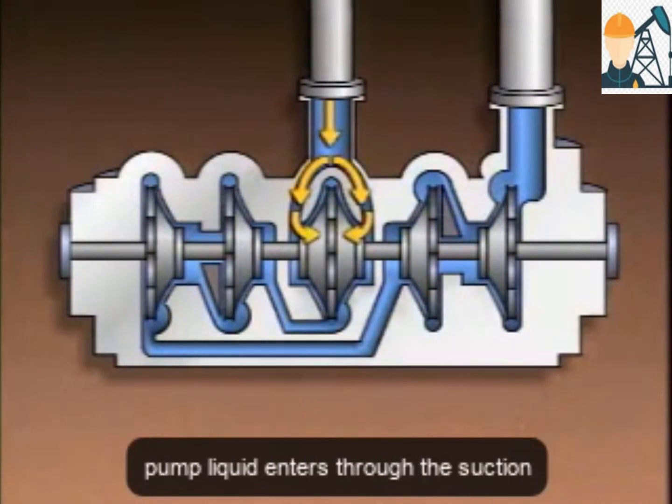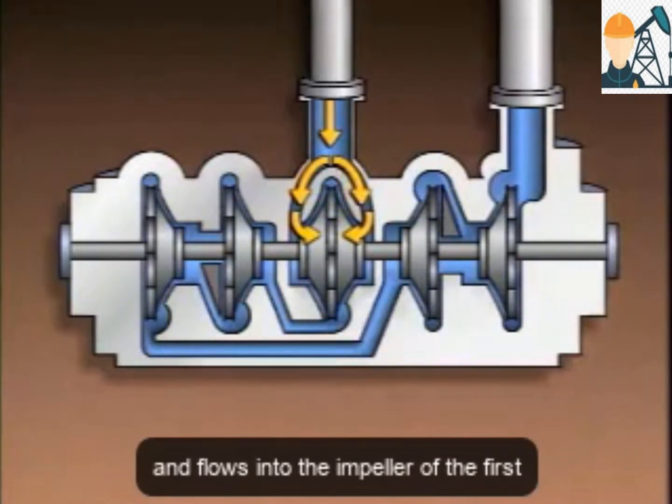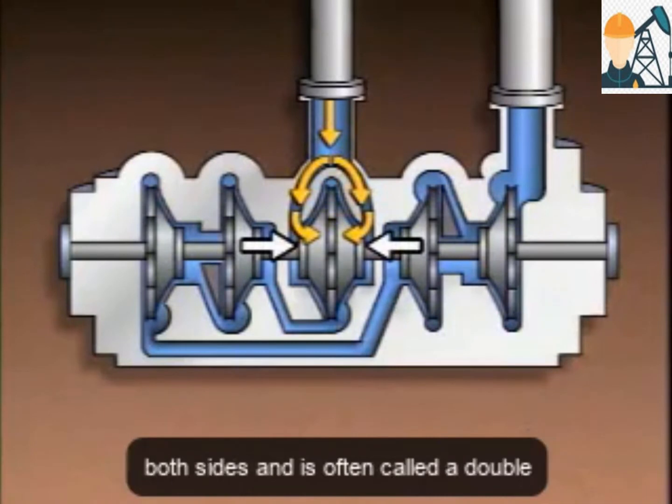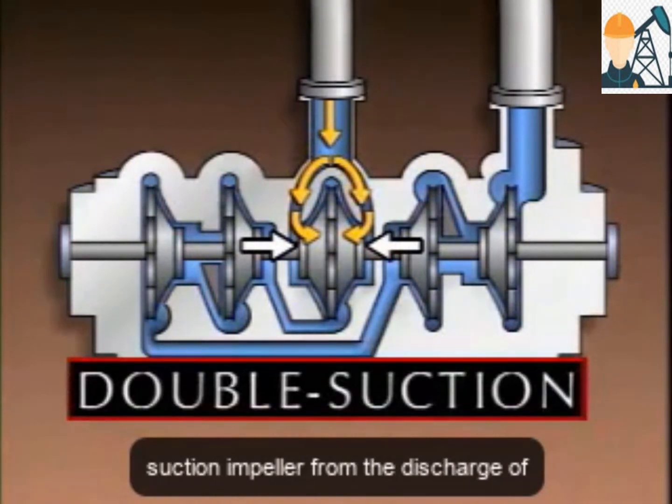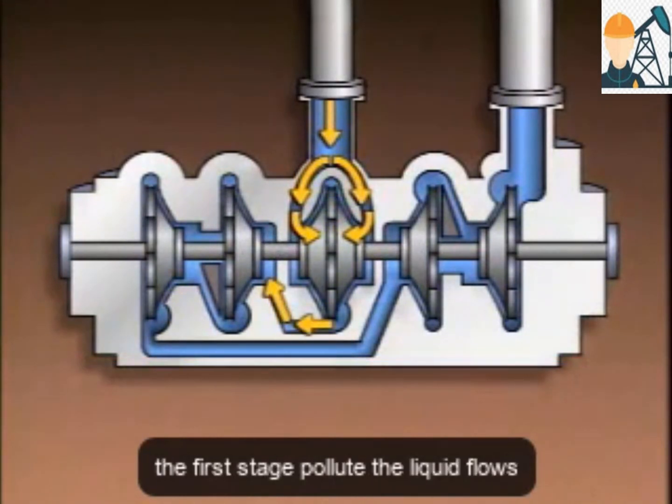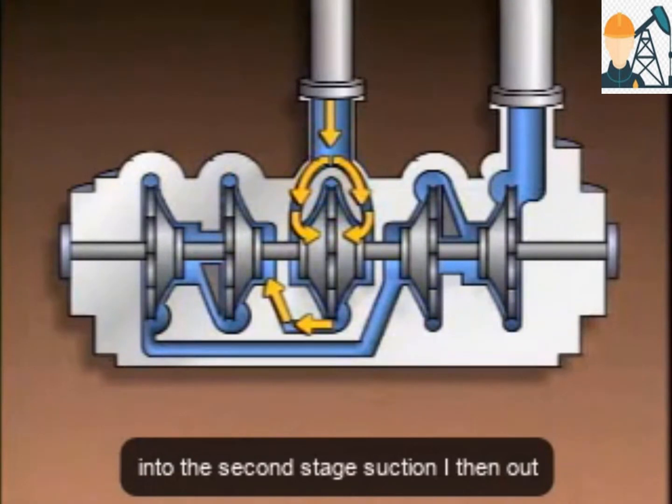In this pump, liquid enters through the suction and flows into the impeller of the first stage. This impeller has a suction eye on both sides and is often called a double suction impeller. From the discharge of the first stage volute, the liquid flows into the second stage suction eye.